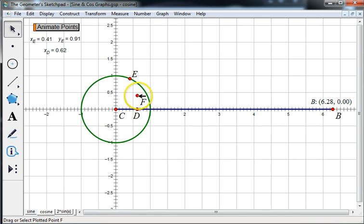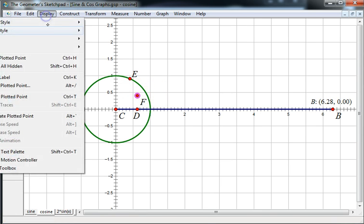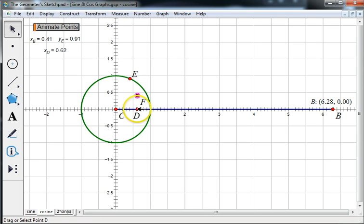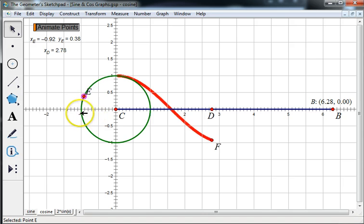And let's trace that point. Bring e down to zero radians. Erase those little traces. And now we should get a cosine curve. Notice that cosine hits zero at pi over two. It hits negative one at pi. Back to zero at three pi over two. And back to positive one at zero.